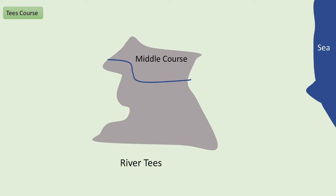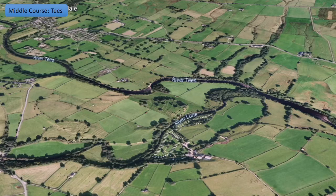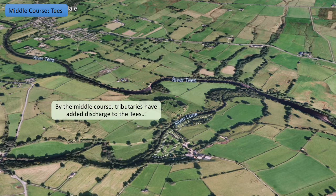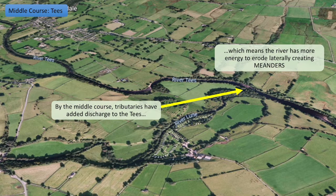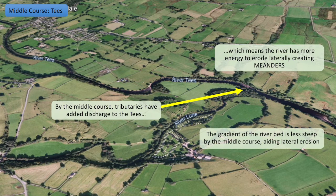Now we're going to look at the middle course and see how the characteristics change. By the time we reach the middle course, tributaries have started to add more discharge to the main Tees — the River Lune is adding water at this confluence. With more water the river has more energy and can start to erode sideways, what we call lateral erosion, which eventually creates bends in the river called meanders. The gradient of the riverbed is now much less steep, so the water is eroding outwards through lateral erosion, making these meanders bigger and bigger.